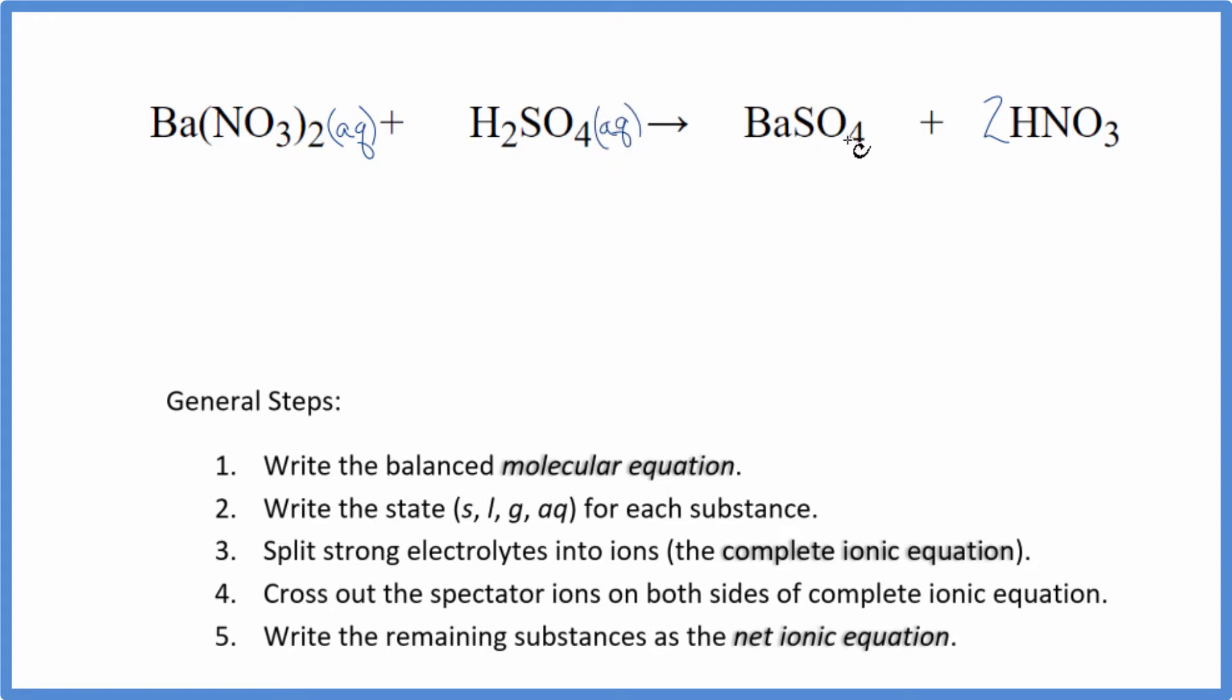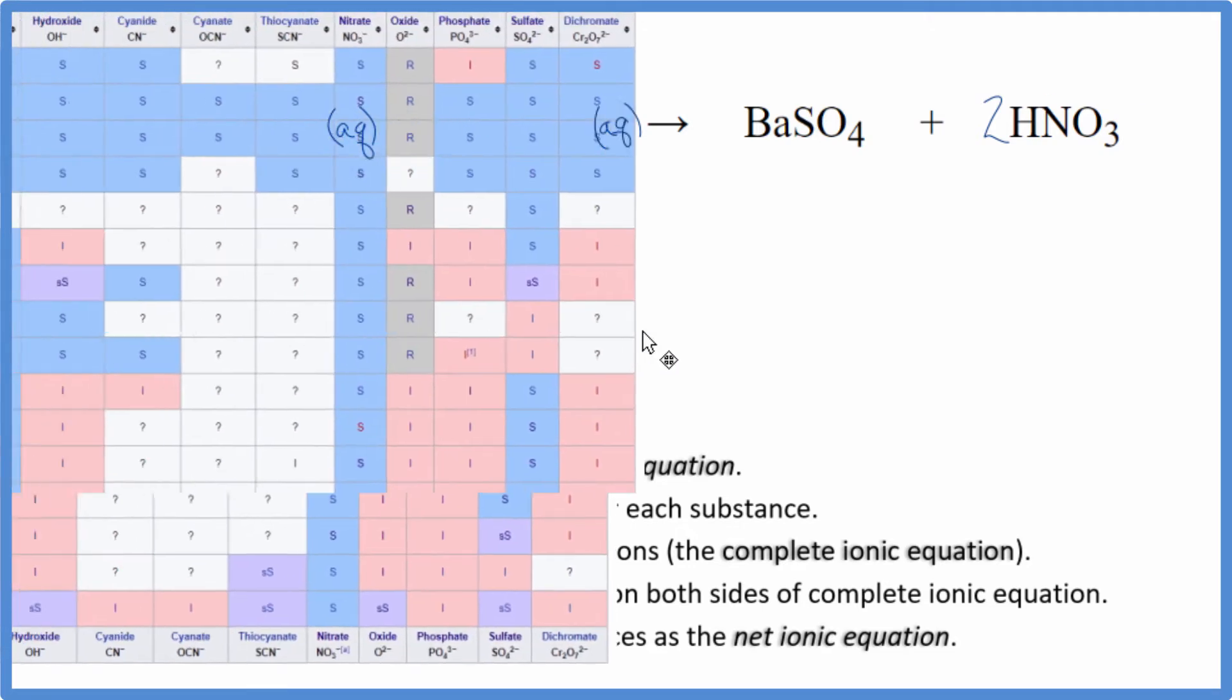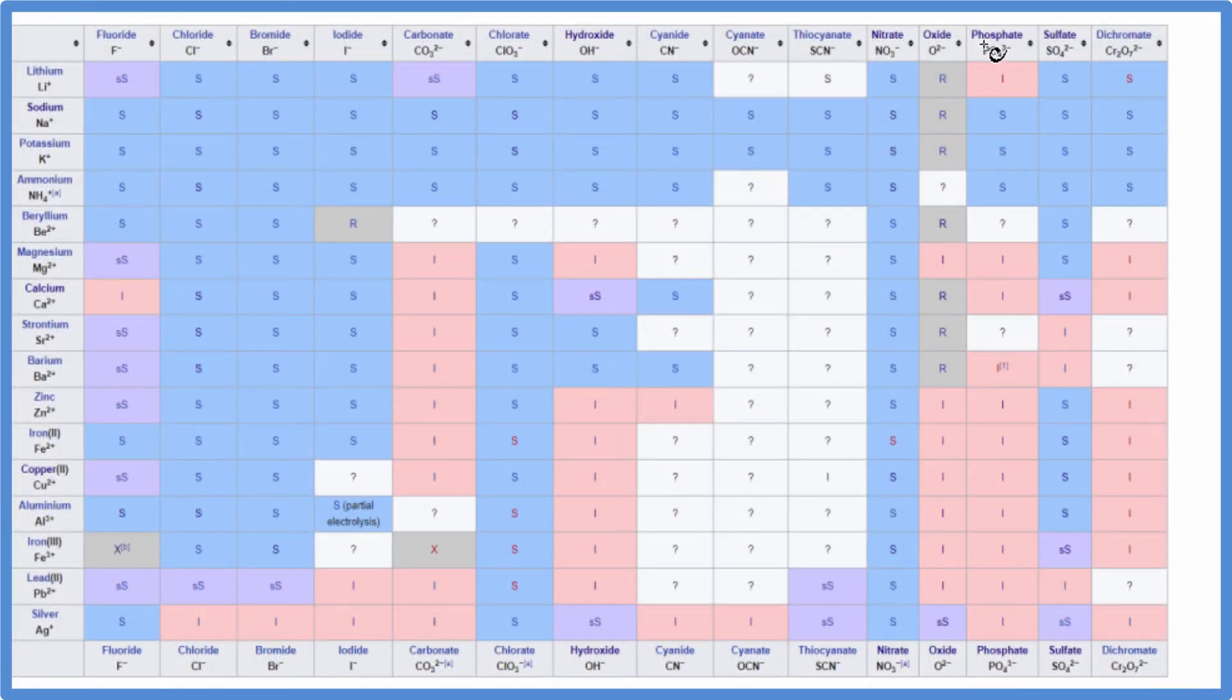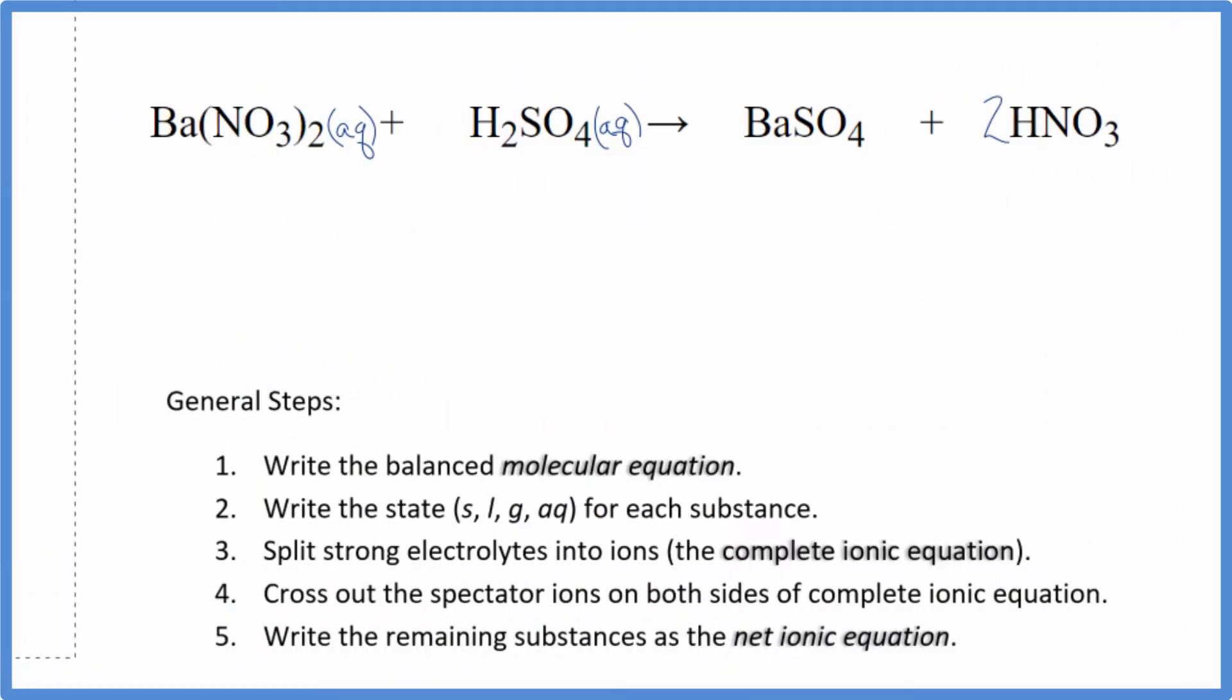Barium sulfate, sulfates in general are soluble, but I believe barium is an exception. Let's look at that. So our sulfates are right here, and most of them are S, with a few exceptions. These here, and then these few down here, insoluble, slightly soluble. Barium, right here, we go over, and that I, that means it's insoluble. It's not going to dissolve in water. So because of that, we're going to put an S after the BaSO4.